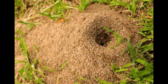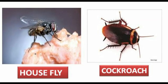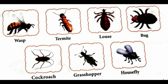Now let us learn about harmful insects. Insects are harmful to plants, animals and human beings. These insects can bite or sting us. Some of these insects carry diseases. House fly and cockroach are common insects that carry many diseases on their feet and transfer them to food items, which may cause food poisoning, dysentery, and diarrhea. Look at the picture — here we can find insects like wasps, termites, lice, bugs, cockroaches, grasshoppers, house flies, etc.